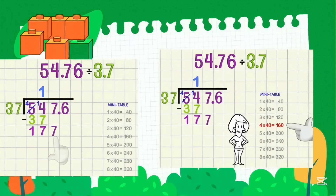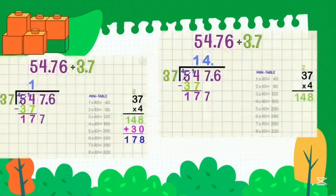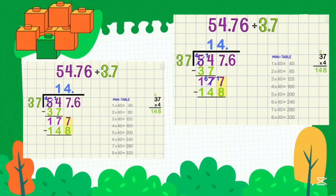Bring down the next digit. How many 37s are in 177? My mini table of 40 tells me that 4 is the number to choose. Set up 37 into 4: 7 into 4 is 28, and 4 threes are 12 plus 2 is 14. Just adding another 37 takes me to 178 — too much. We know 4 is the right fit. I put 4 on the answer line and place the decimal point matching with the dividend.